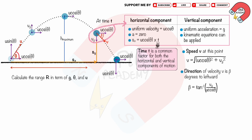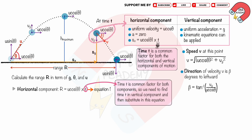Let's calculate the range r in terms of gravity g, angle theta, and initial velocity u. In the horizontal component, r equals u cosθ times t — let's call this the first equation. The time t is the same for both components, so we need to find t from the vertical component and substitute into the first equation. In the vertical component, the displacement s is zero, the initial velocity is u sinθ upward, and the acceleration is negative g downward.